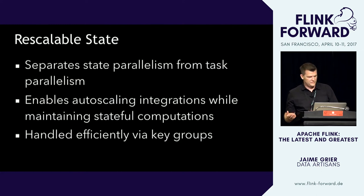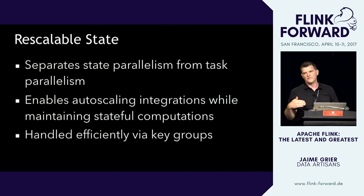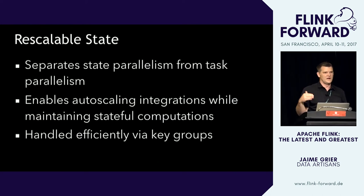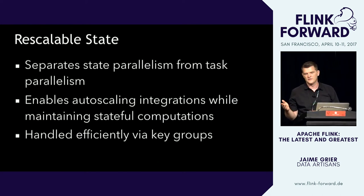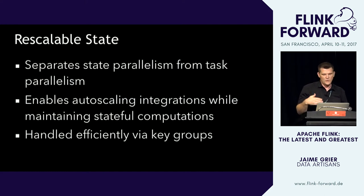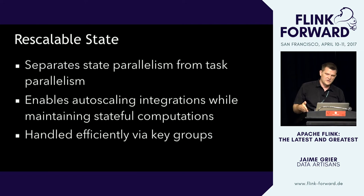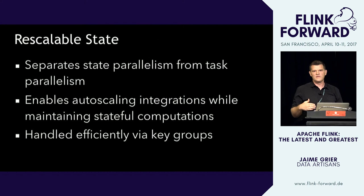Rescalable state — for Flink users, prior to Flink 1.2, Flink always managed state fault-tolerantly, but the problem was that once you were running a job with a certain parallelism, you couldn't relaunch it with a new parallelism and keep all the state intact. Now you can. You can have a job running with parallelism of 100, stop it with a save point, and restart with parallelism 200, and Flink will appropriately reassign all state to the right tasks.